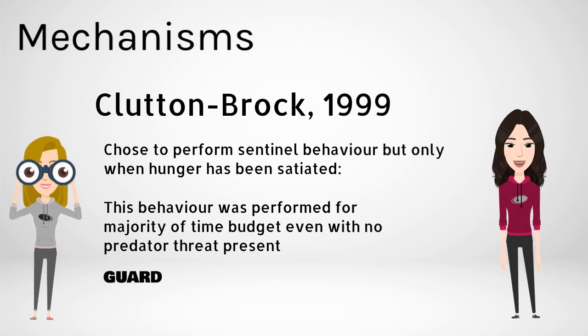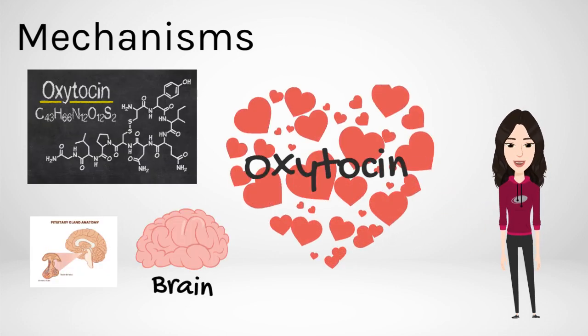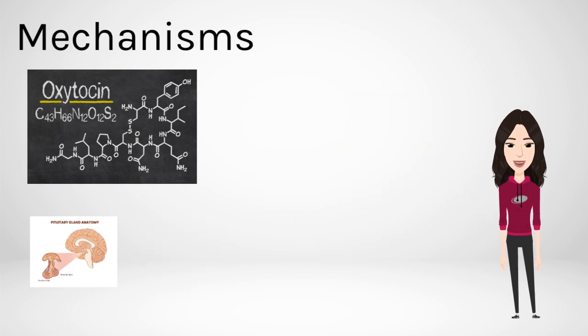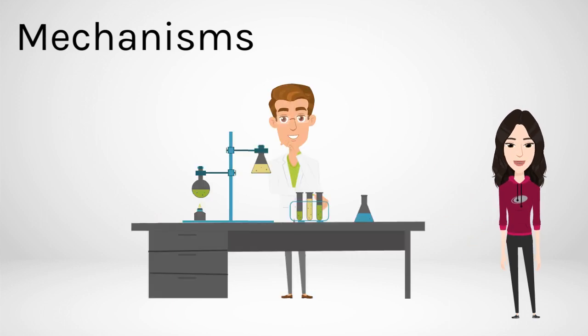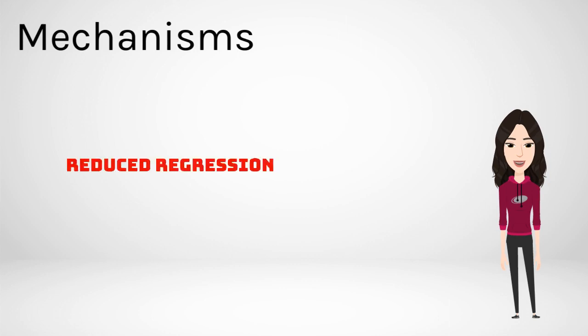One other mechanism suggested as to why meerkats perform this behaviour is related to oxytocin levels. Oxytocin is a peptide hormone and neuropeptide created in the hypothalamus that contributes to social bonding, sexual reproduction and childbirth. A study carried out by Madden in 2010 found that by administering oxytocin to the meerkats, social behaviours such as digging, feeding pups and guarding were enhanced. Levels of social aggression conversely decreased as well.